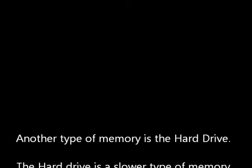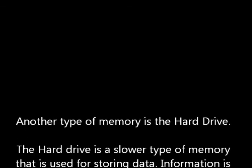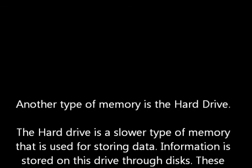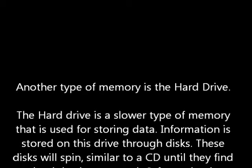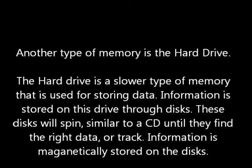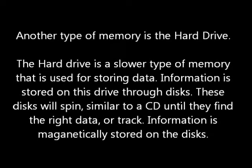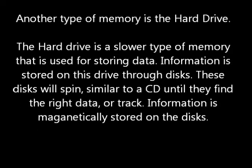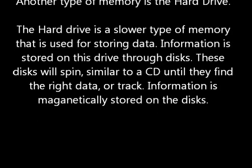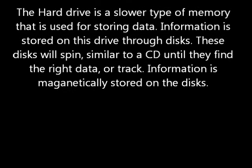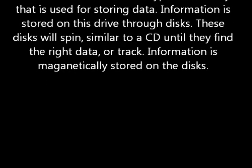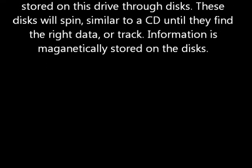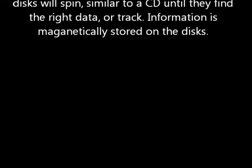Another type of memory is the hard drive. The hard drive is the slower type of memory that is used for storing data. Information is stored on this drive through disks. These disks will spin, similar to a CD, until they find the right data or track. Information is magnetically stored on these disks.